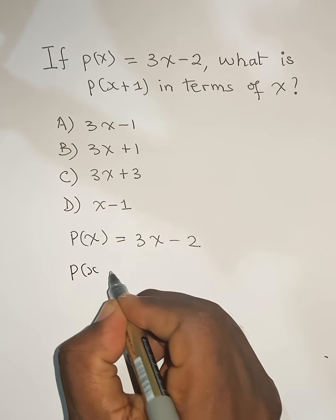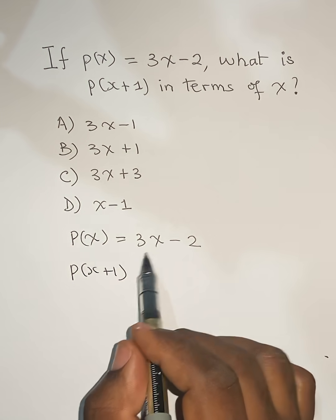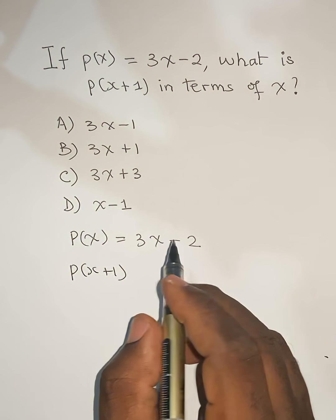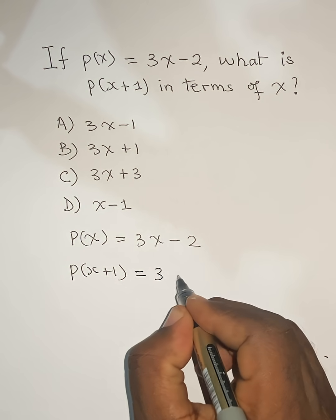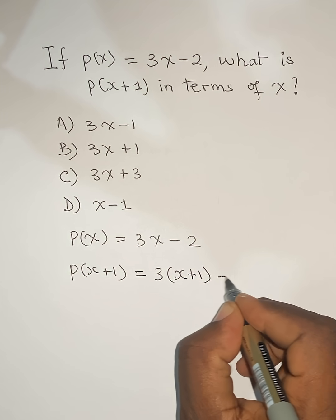p(x+1) simply means that everywhere where we find x, we replace it with x+1. So this is equal to 3(x+1) - 2.